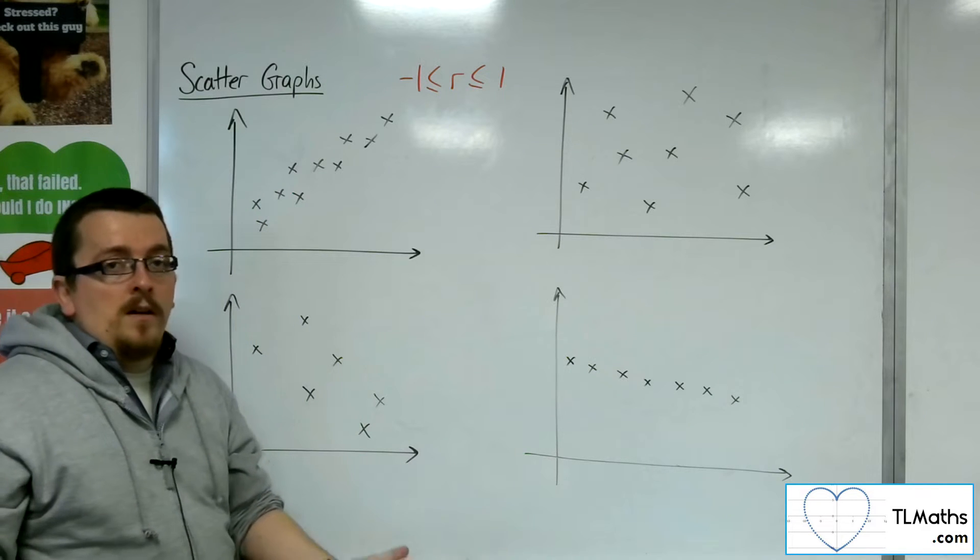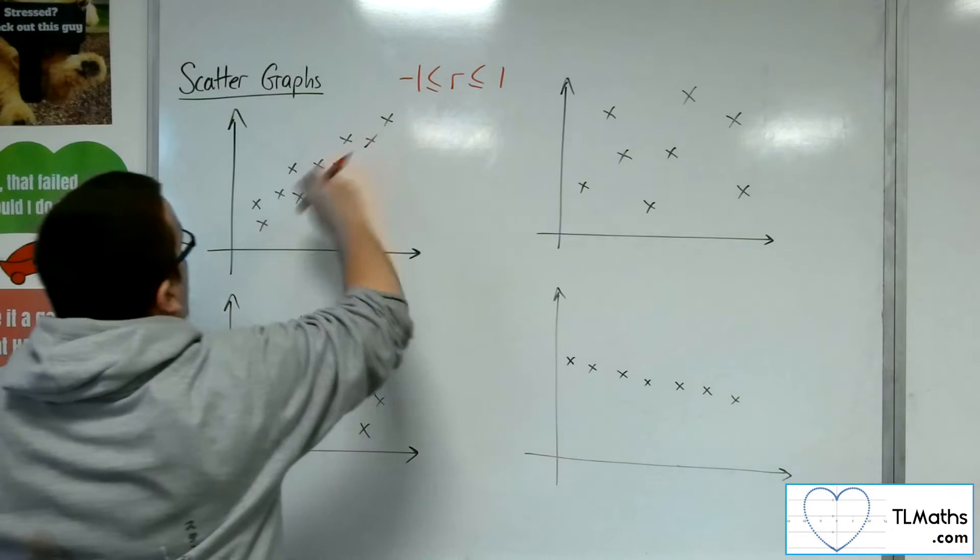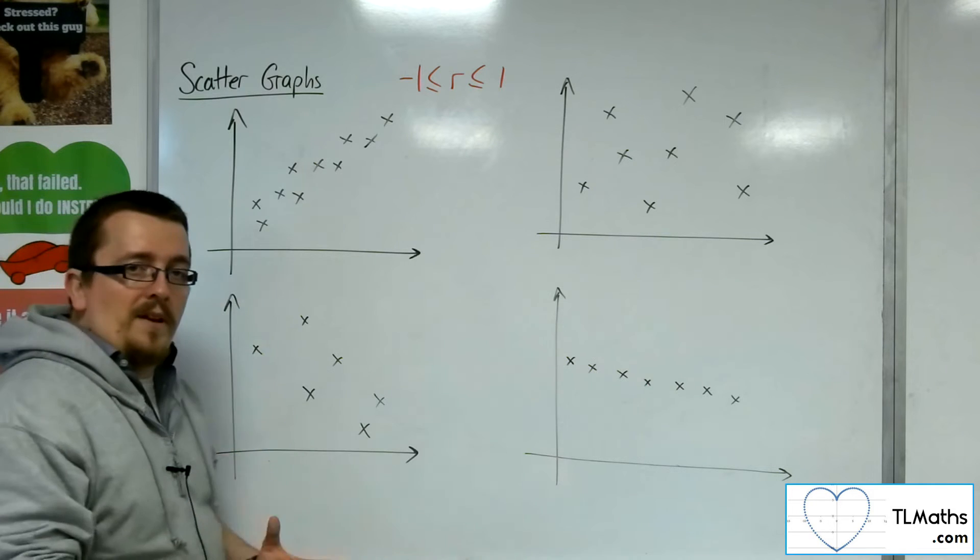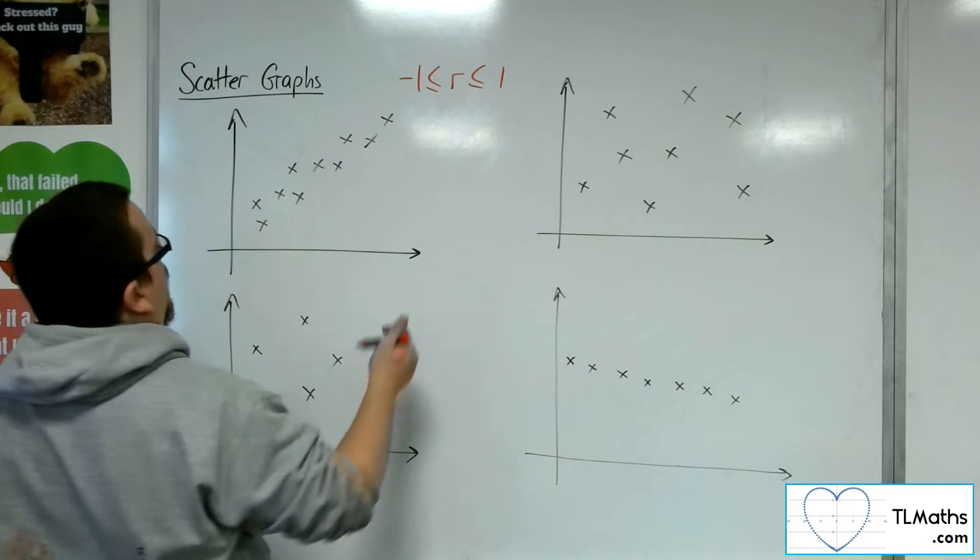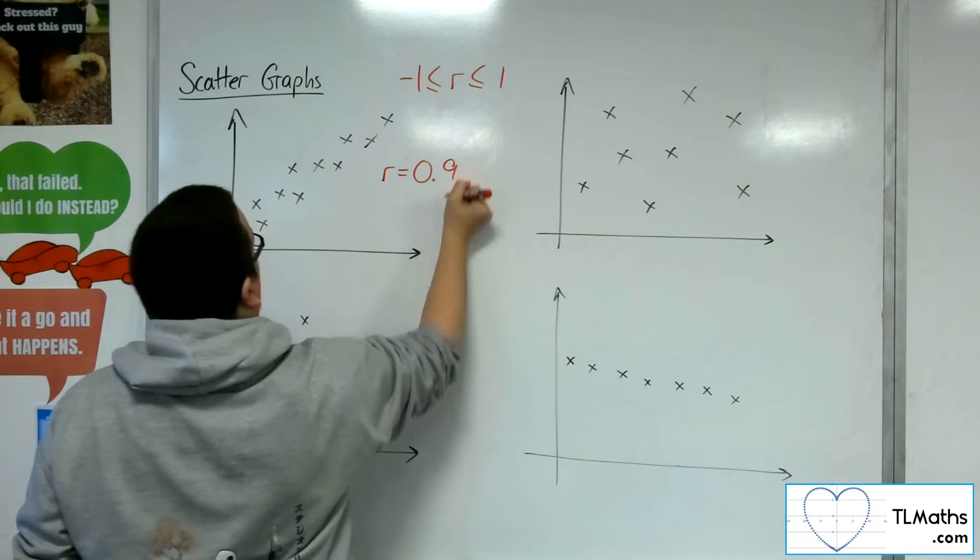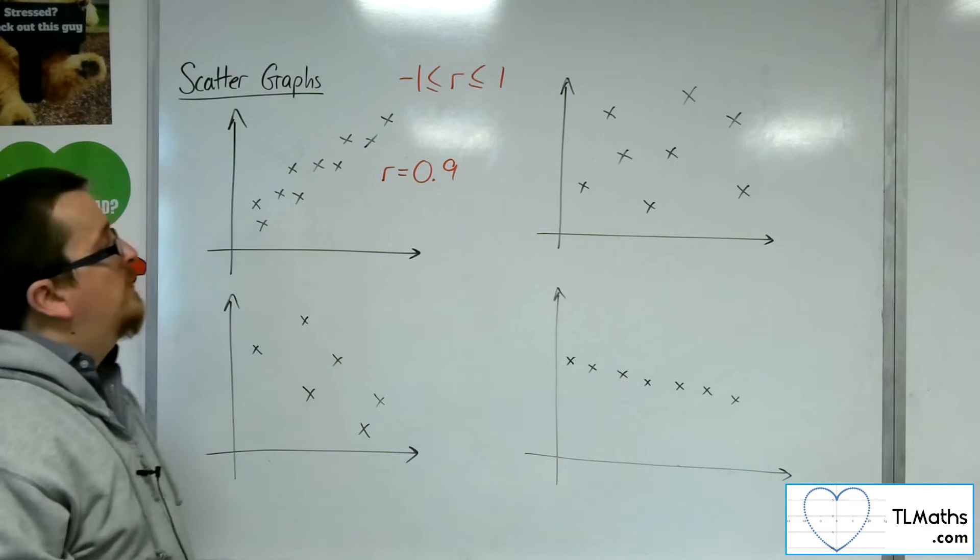If we look at this first one, we can see it's a positive correlation. We're going from bottom left to top right. The data points are quite close together. They're not perfectly close together, but this would be relatively strong positive correlation. So r equals 0.9 wouldn't go amiss here. That seems reasonable.